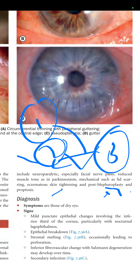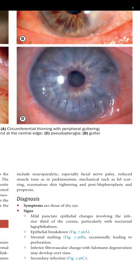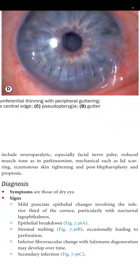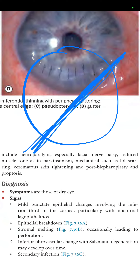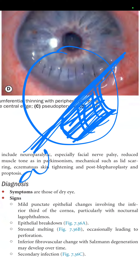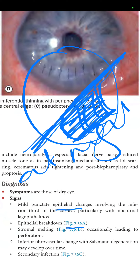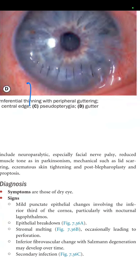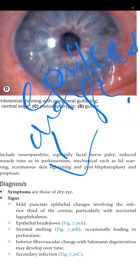Symptoms of exposure keratopathy are those of dry eye: dryness, burning, and irritation. Signs include mild punctate epithelial changes involving the inferior third of the cornea, particularly due to nocturnal lagophthalmos, as the eyelid is unable to close the cornea properly at night. Progressive findings include epithelial breakdown, stromal melting occasionally leading to perforation, inferior fibrovascular changes, and Salzmann's nodular degeneration over time, as well as secondary infection.